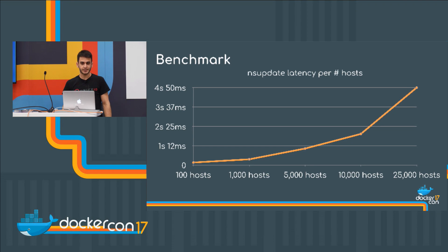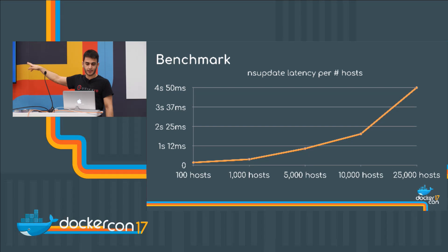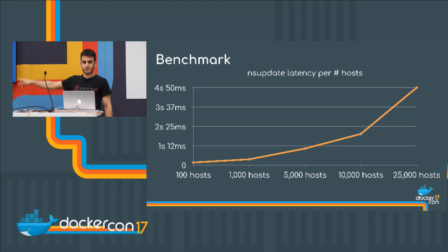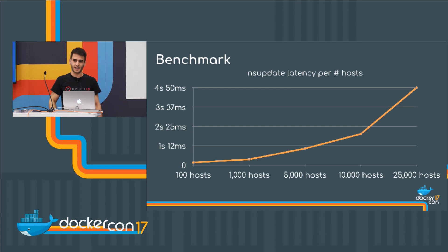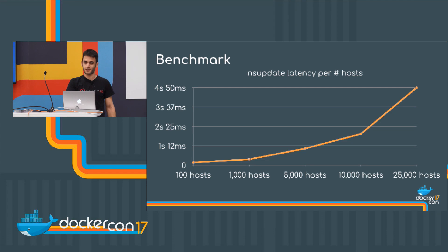Here are some benchmarks. NS update latency increases with the number of hosts. I tried with 100 hosts, 1,000 hosts, and 5,000. One issue is that if these are GPU machines, at 25,000 hosts the cost is going to be 61 cents per machine per day — so you're looking at maybe 15k a day. I don't think anybody's going to be able to get 25,000 GPU machines on cloud like Azure or AWS, but if you do, hey, you can.